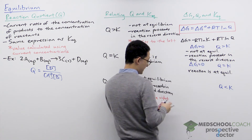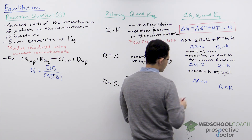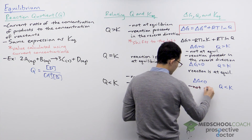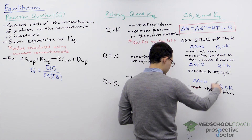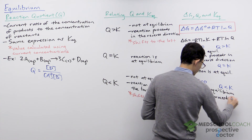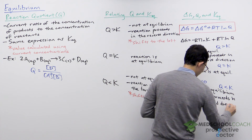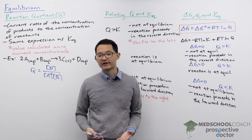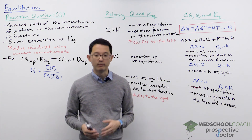If Q is less than K, the negative term is larger than the positive term, so delta G is less than zero. This means the reaction is not at equilibrium and will proceed in the forward direction to increase Q toward K. This is consistent with a negative delta G indicating a spontaneous forward reaction — Q < K means the reaction wants to form more products.